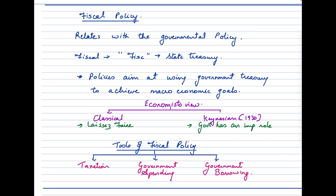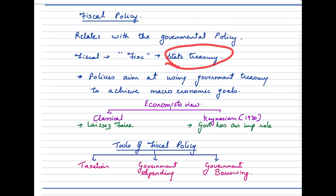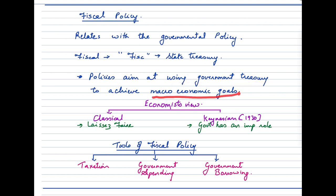The word fiscal comes from 'FISC', which in simple terms means a state treasury or the treasury of the government. So fiscal policy aims at using the government treasury to achieve various macroeconomic goals.